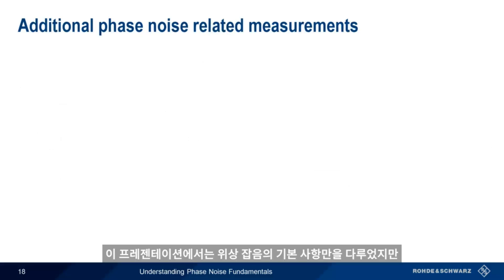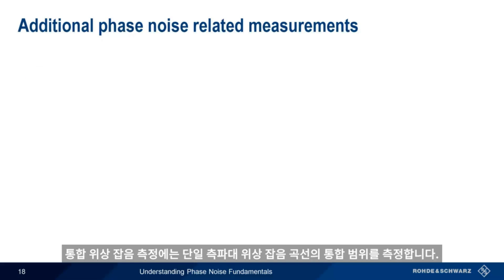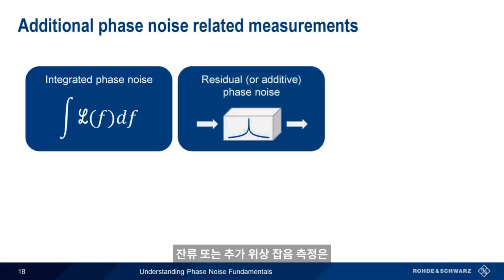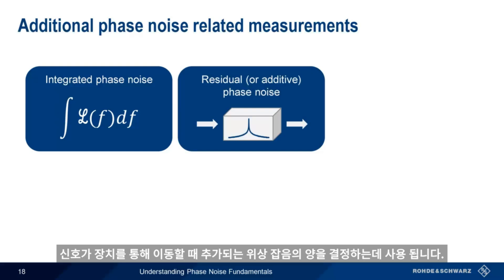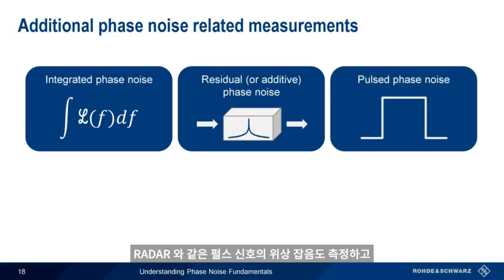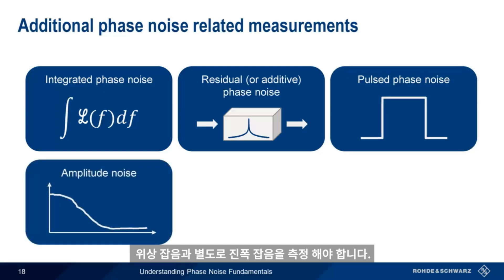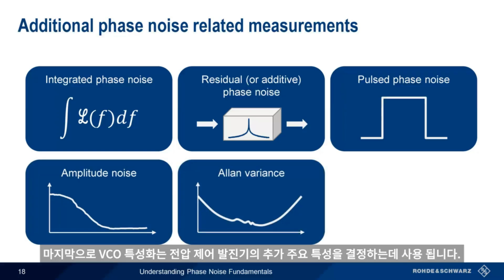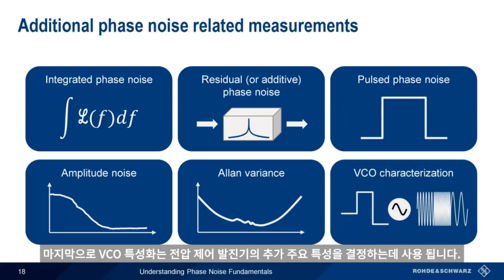In this presentation, we've covered the fundamentals of phase noise, but there are many other types of phase noise and phase noise related measurements. Integrated phase noise measurements involve integrating over some portion of the single sideband phase noise curve. Residual or additive phase noise measurements are used to determine how much phase noise is added as a signal moves through a device. Measuring the phase noise of pulse signals, such as radar, presents special challenges, as does measuring amplitude noise separately from phase noise. Allan variance is a measure of long-term frequency stability. And finally, VCO characterization is used to determine additional key properties of voltage-controlled oscillators.